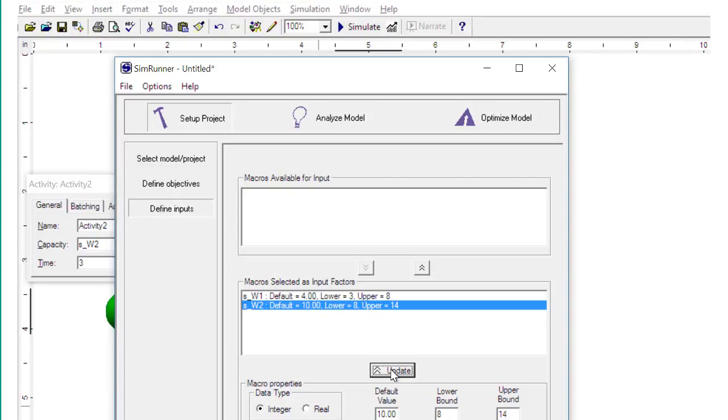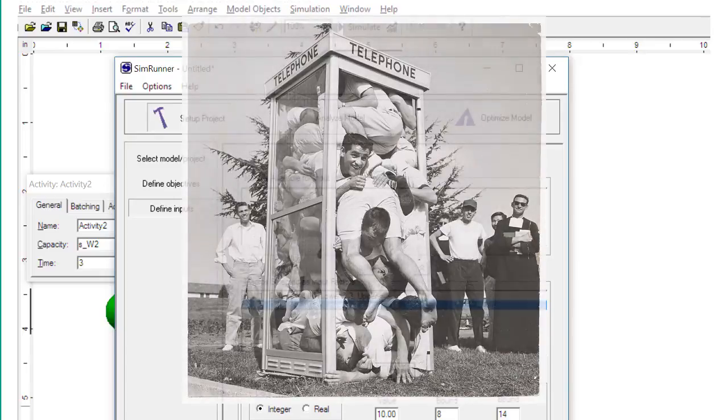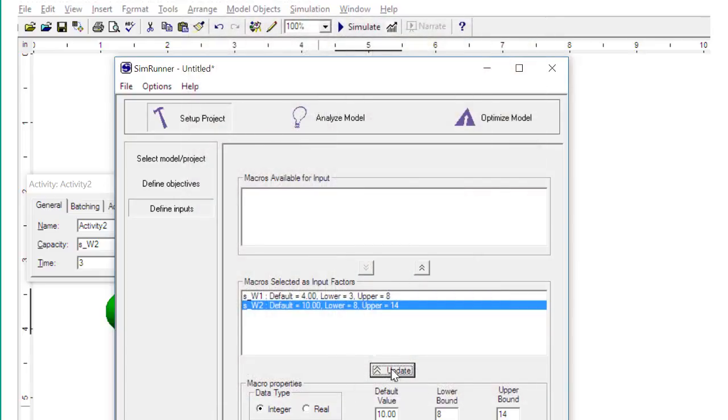The range acts as a reasonable limit for experimentation. For example, your facility might only allow eight workers because of space limitations. Allowing nine workers might be interesting but not practical. Limiting the range also speeds the experimentation.